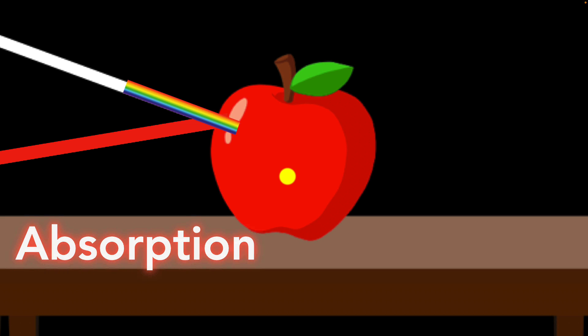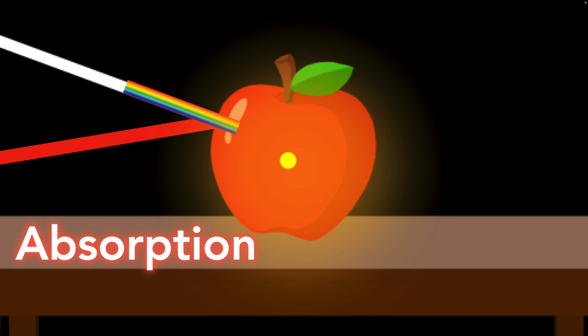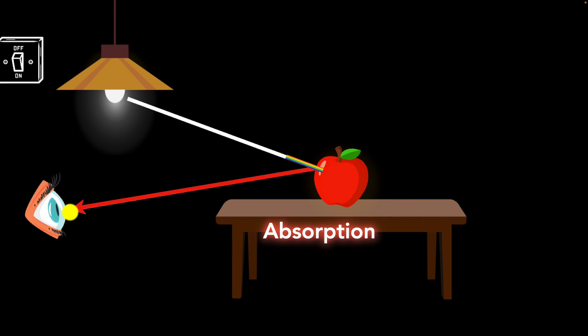We call that absorption. So light not only gets reflected off of things but they also get absorbed. And what happens to the energy of that light? It doesn't just disappear, but that energy gets transferred to thermal energy and that's what heats up the apple just a little bit. But anyways, this is the reason why we see the apple to be pretty much red in color because it reflects red light and it absorbs the rest. Similarly, the leaf appears green because it reflects green light and it absorbs the rest. Now whether a particular frequency of light gets absorbed or reflected depends on the frequency and it depends on the material itself. The skin of the apple interacts differently with light compared to the skin of the leaf.